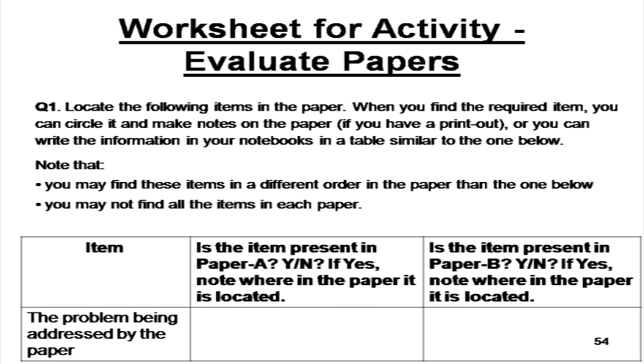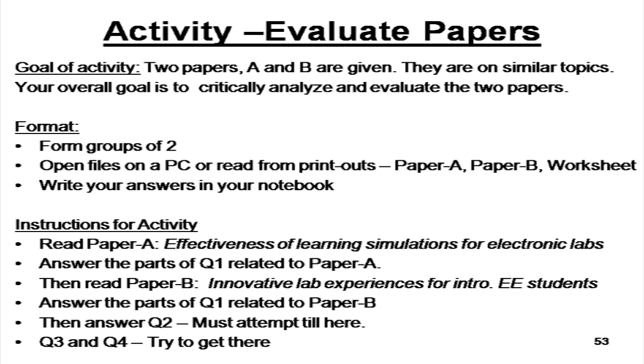This is just the first part of the worksheet. You will see a table with an item; in the table you will have to answer a yes or a no, and there are about ten such items in question 1. Similarly there are questions 2, 3, and 4 where again you have to analyze the papers and the worksheet tells you precisely what to do. First read paper A and answer all questions related to paper A, then read paper B and answer all parts of questions related to paper B. You and your partner can discuss the answers and write them in a notebook — this is a pair activity.